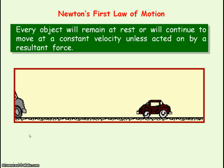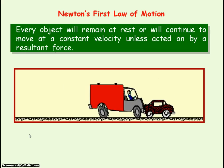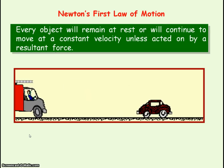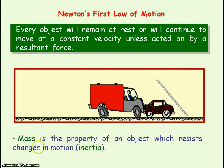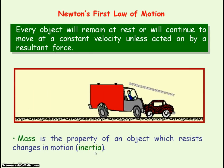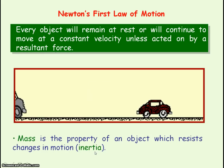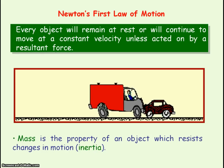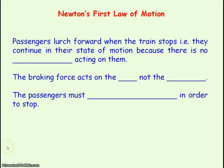An object resists changes in its motion due to the fact that it has mass. We say mass is an inertial property of an object, with inertia meaning resistance to changes in motion. An application of Newton's First Law of Motion is passengers lurching forward when a train stops, because they continue in their state of motion as there's no force acting on them.